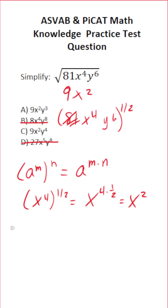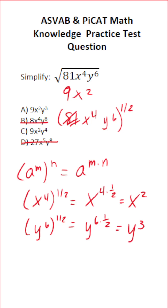Let's do the same thing with y. We have y to the 6th to the 1 half power. That's equal to y to the 6th times 1 half, which is y to the 3rd. So just like that, using the power rule, we were able to simplify this to be 9x squared y to the 3rd, which is answer choice A.